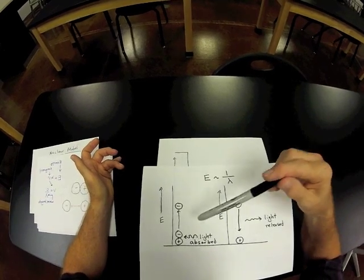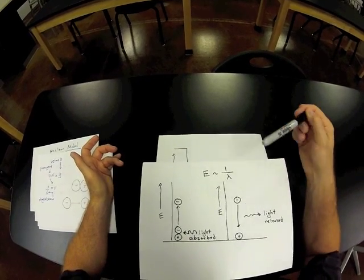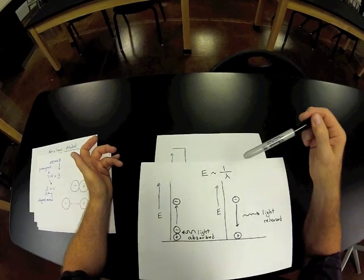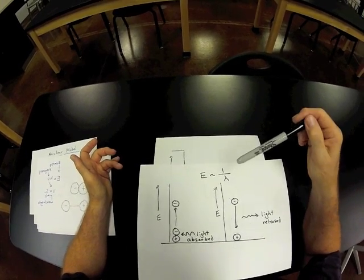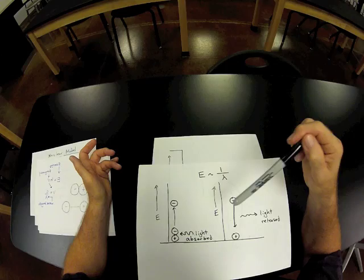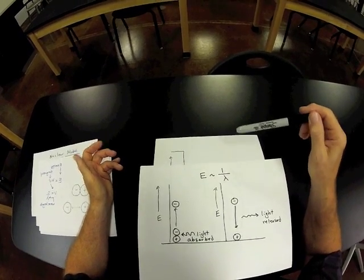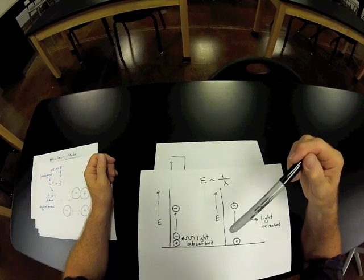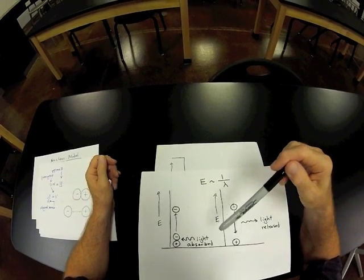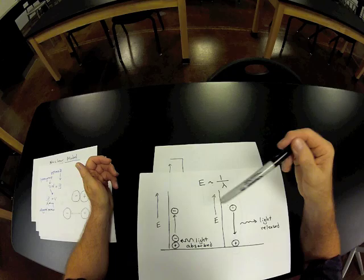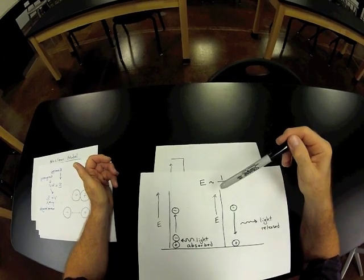Yet this kind of model doesn't fit the data because the data indicates that only certain wavelengths of light cause certain electrons from a particular metal to be ejected or only certain colors are emitted from a particular kind of salt when you heat it up.